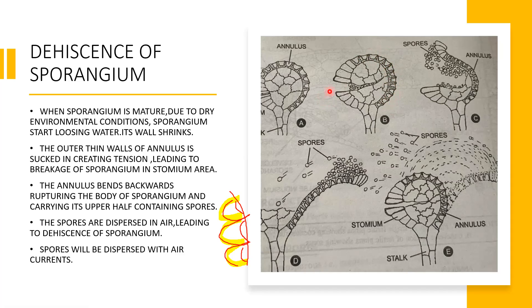As the annulus shrinks, the thin lip part is pulled upward and ultimately ruptures, liberating spores to the outer side. Spores are exposed to the external environment, and then the annulus can spring back to its original position. With this sudden jerk, spores are dispersed or liberated into the air and fall on the substratum or soil, or are carried to distant soil by air currents. When suitable environmental conditions are found, these spores start germinating.